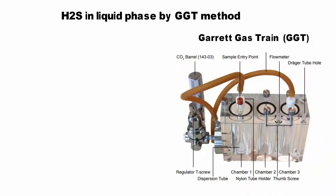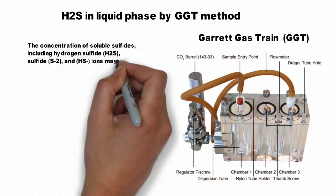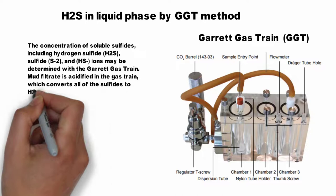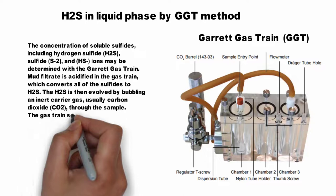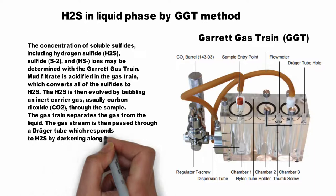The H2S is then evolved by bubbling an inert gas — carbon dioxide in this case — through the sample. The gas train separates the gas from the liquid, and the gas stream is then passed through the Draeger tubes, which respond to H2S by darkening along their length.